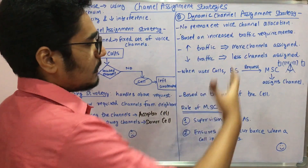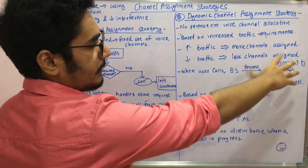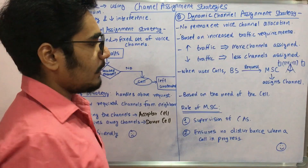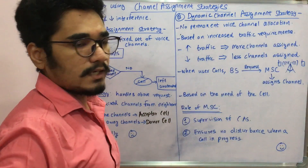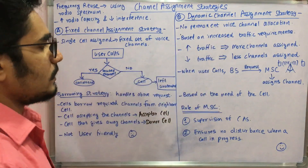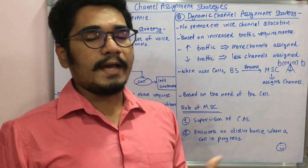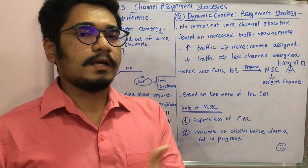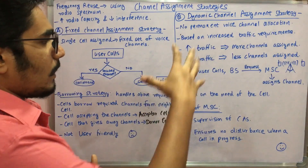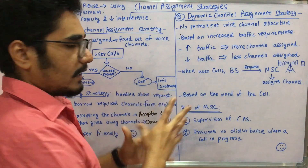Whenever a user makes a call, the base station (BS) sends a request to the Mobile Switching Center (MSC). The MSC facilitates communication between the base station and the mobile user and performs the actual channel assignment. Channel allocation is done by the MSC based on the need of the cell, responding dynamically to requests as they arise.